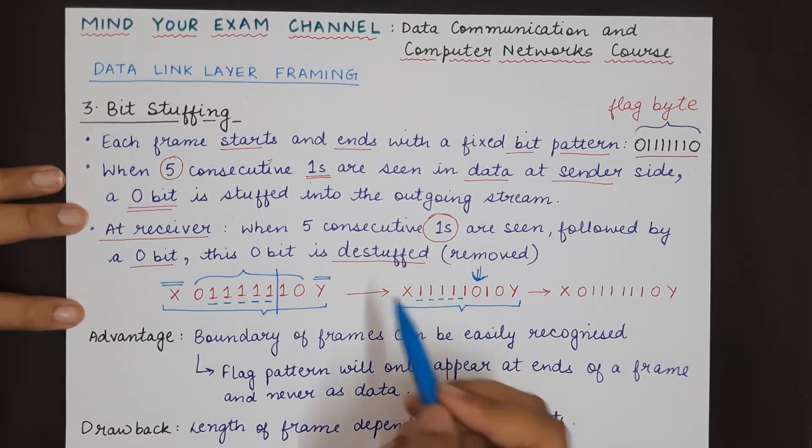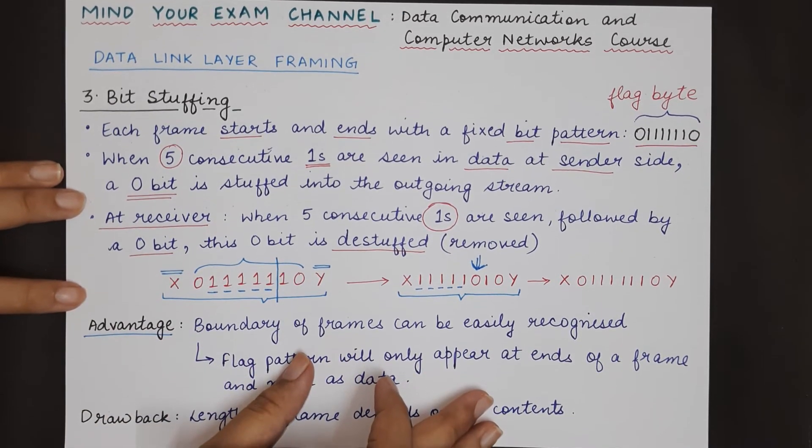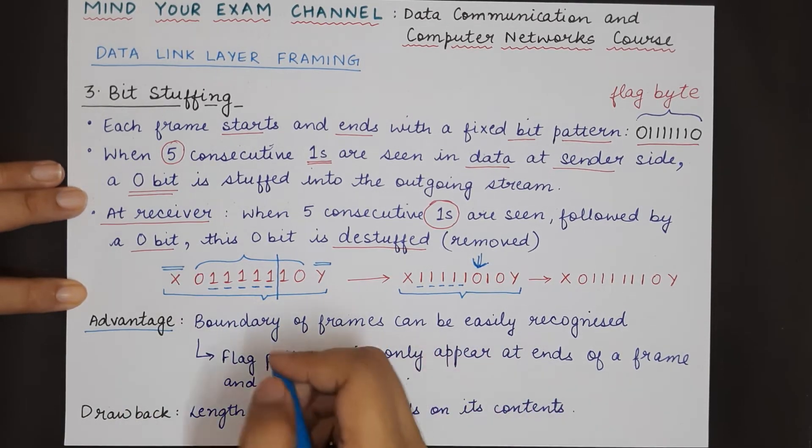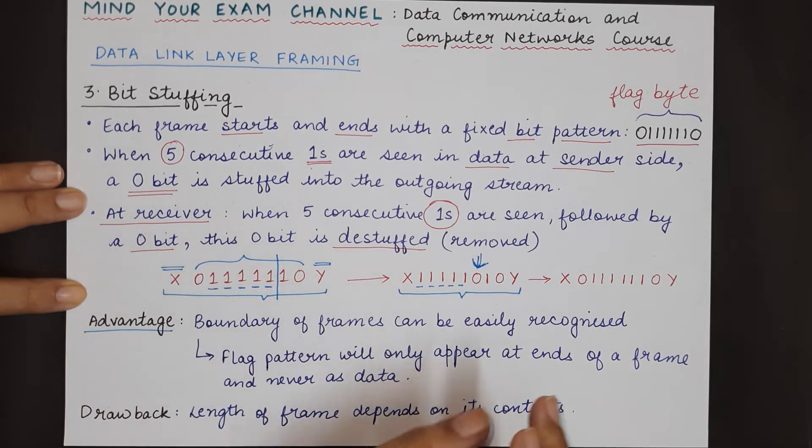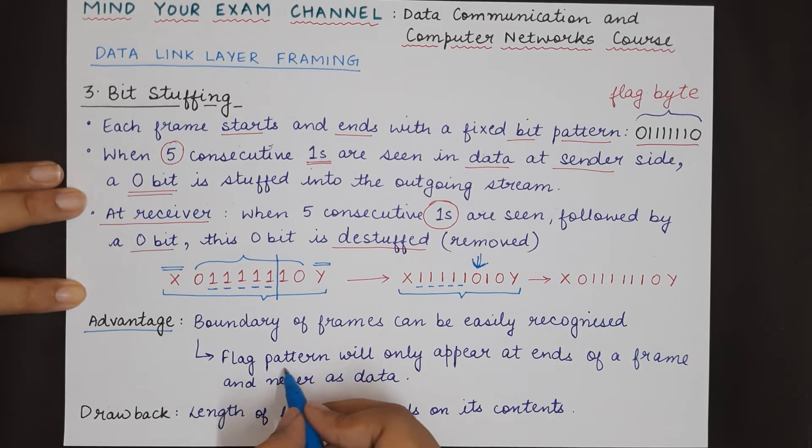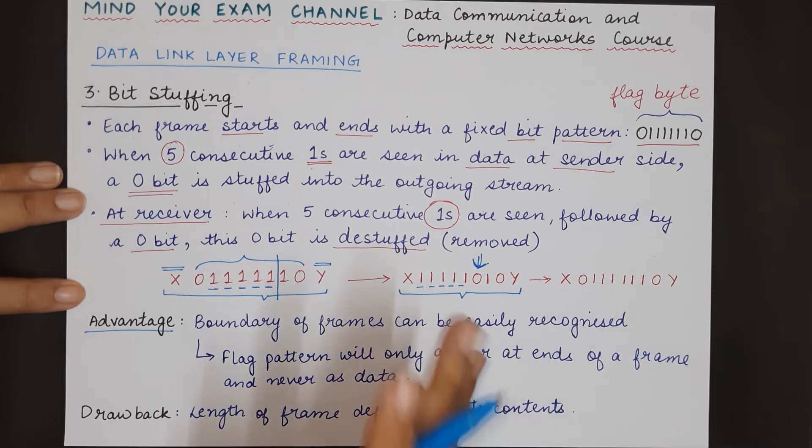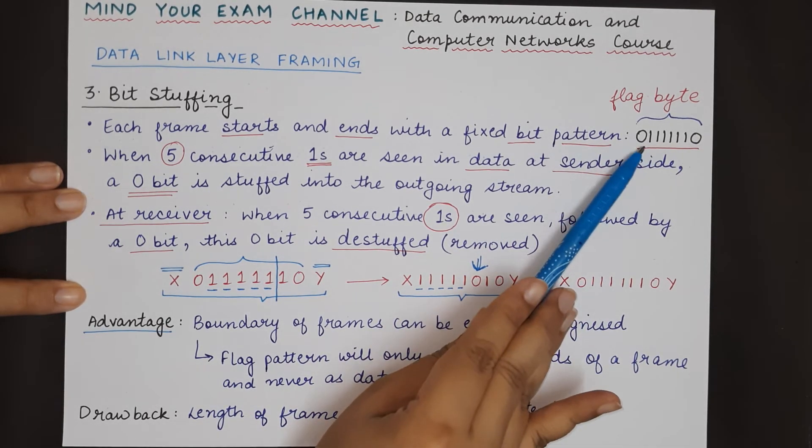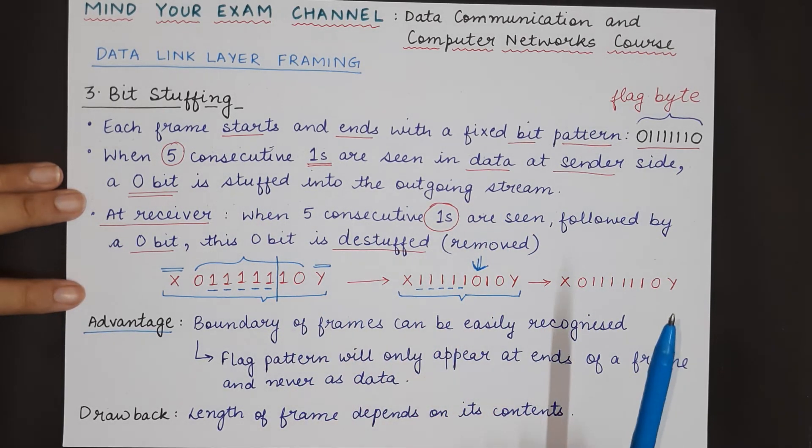What is the advantage of this particular method? The advantage is that the boundary of frames can be easily recognized. If the receiver loses synchronization, it just has to look for the flag pattern. If two consecutive flag patterns are appearing with a bit string, that means it is the ending of one frame and the beginning of the next.